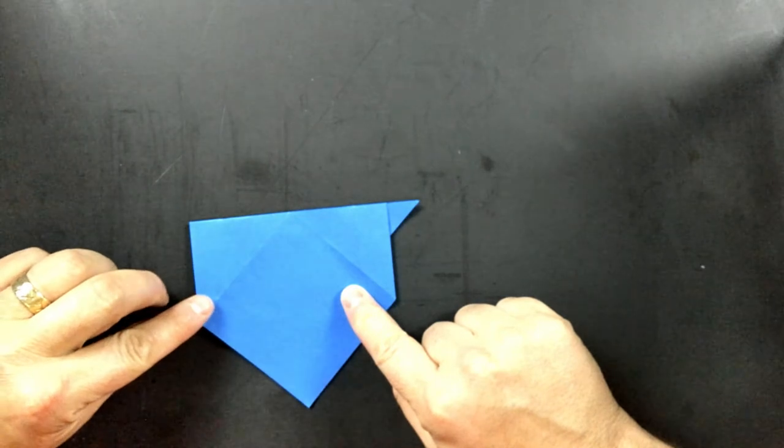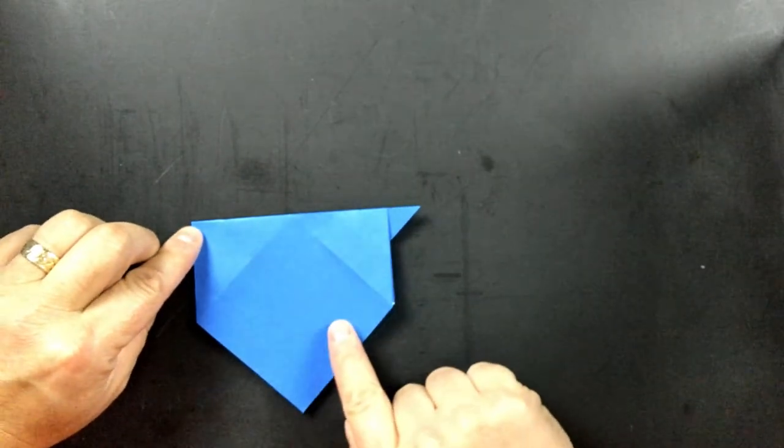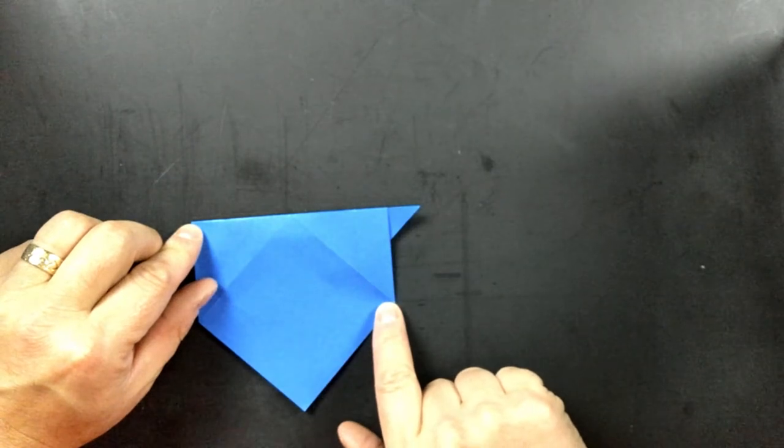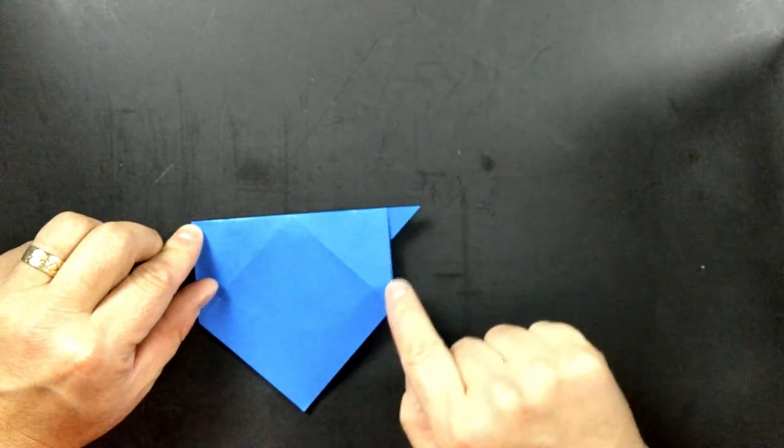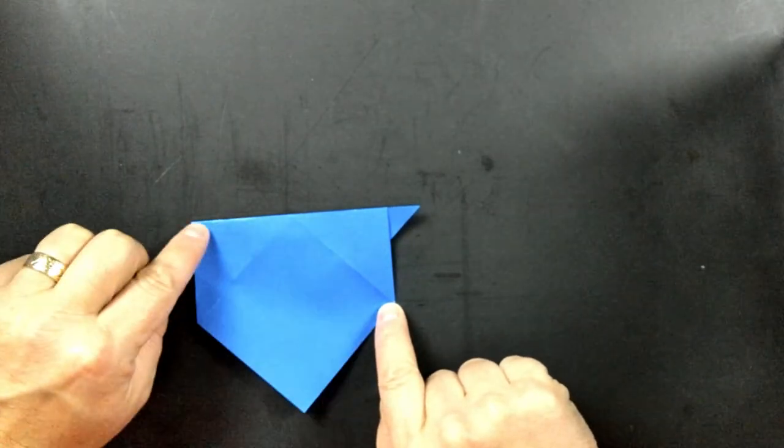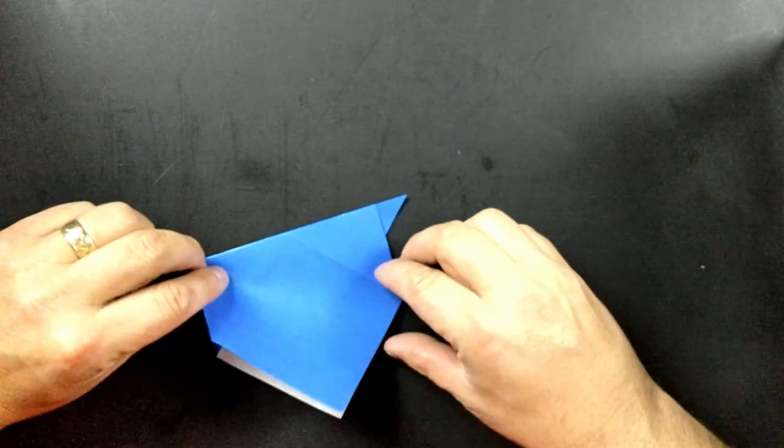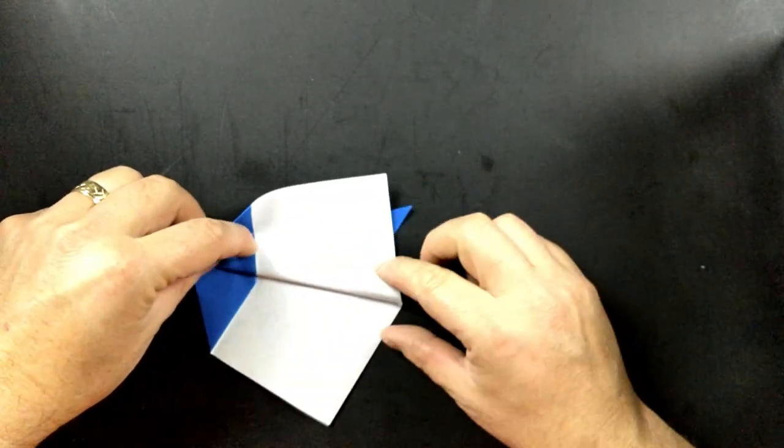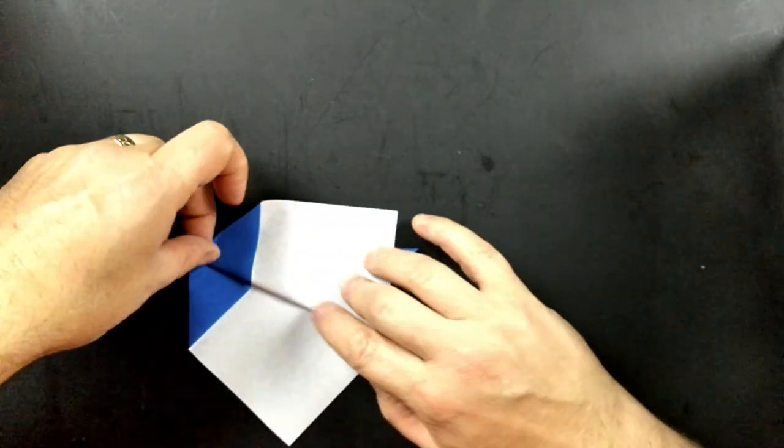So what we're going to do now is we need a fold that goes from this corner right here to that corner underneath the tail. So go underneath the tail to the first kind of corner. It's going to angle so it's going to be a diagonal. Try to get it as perfect as you can.